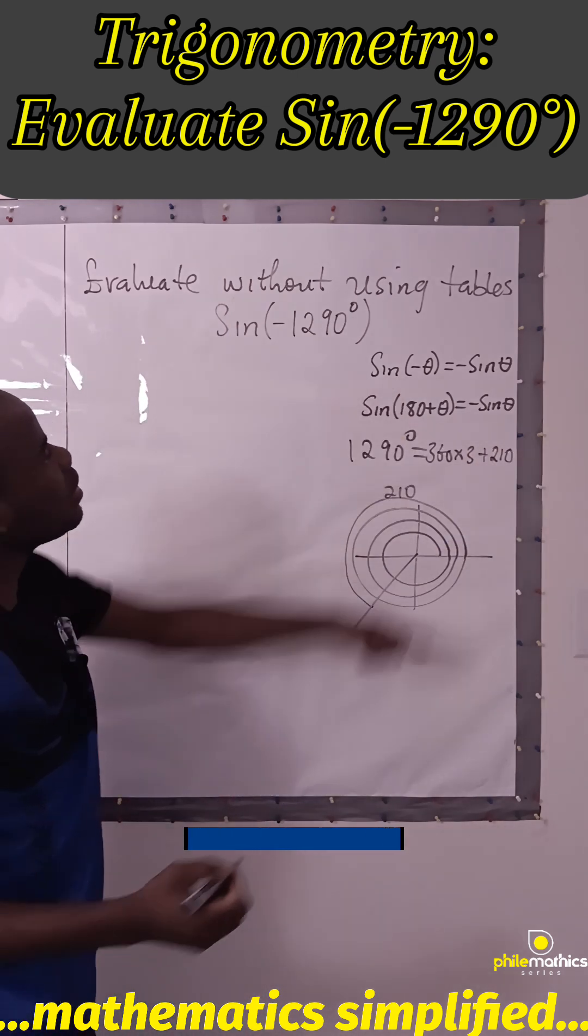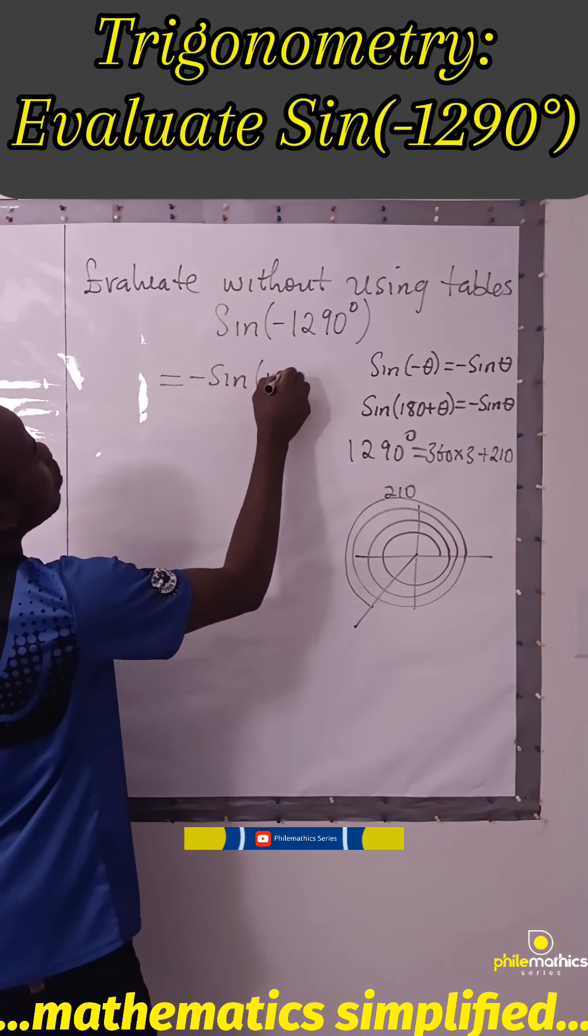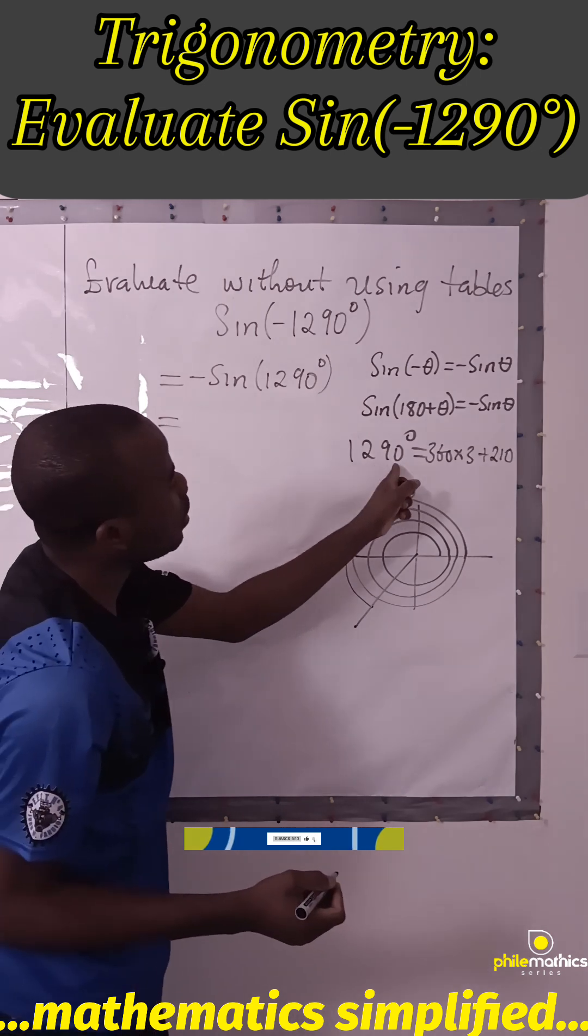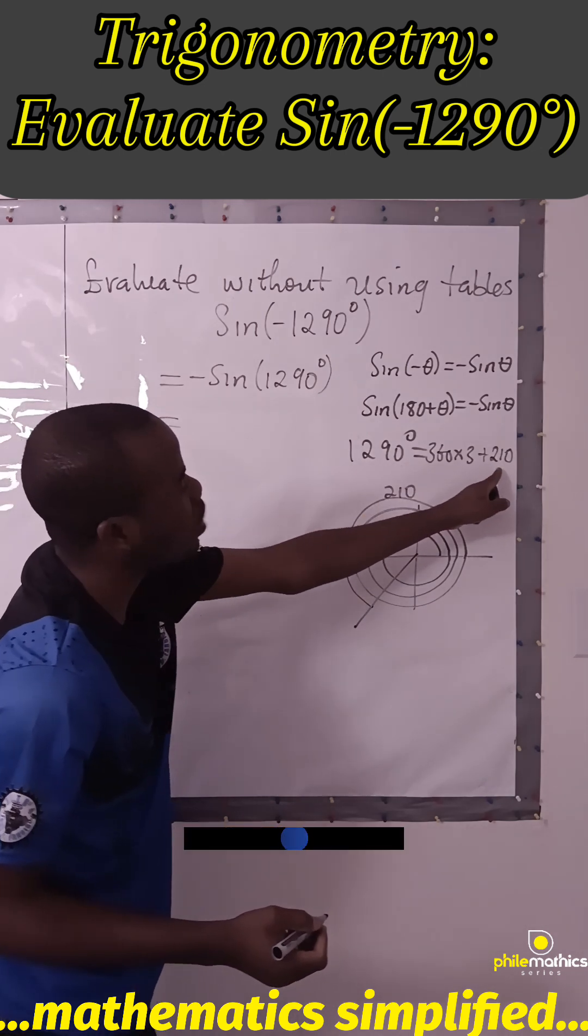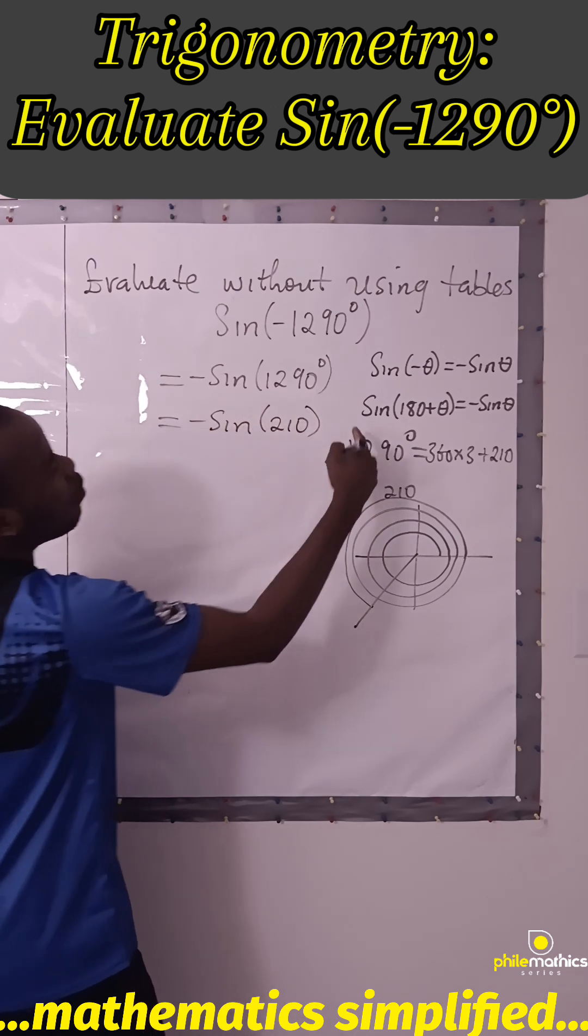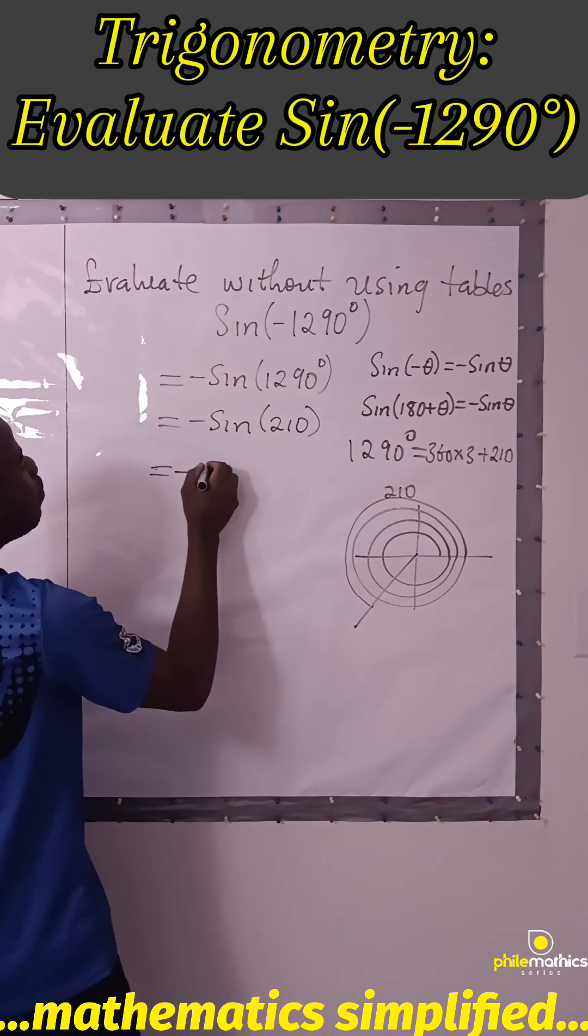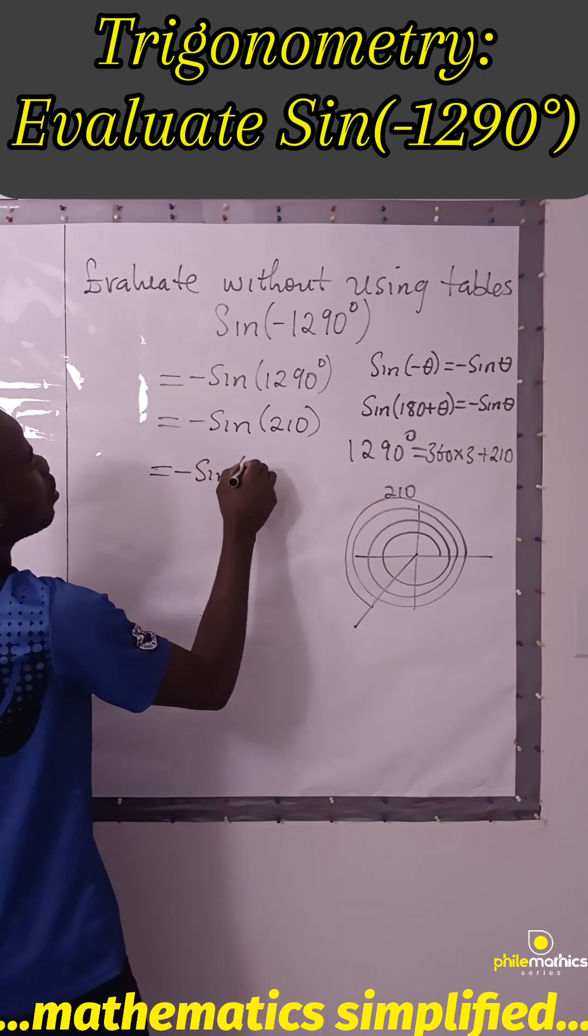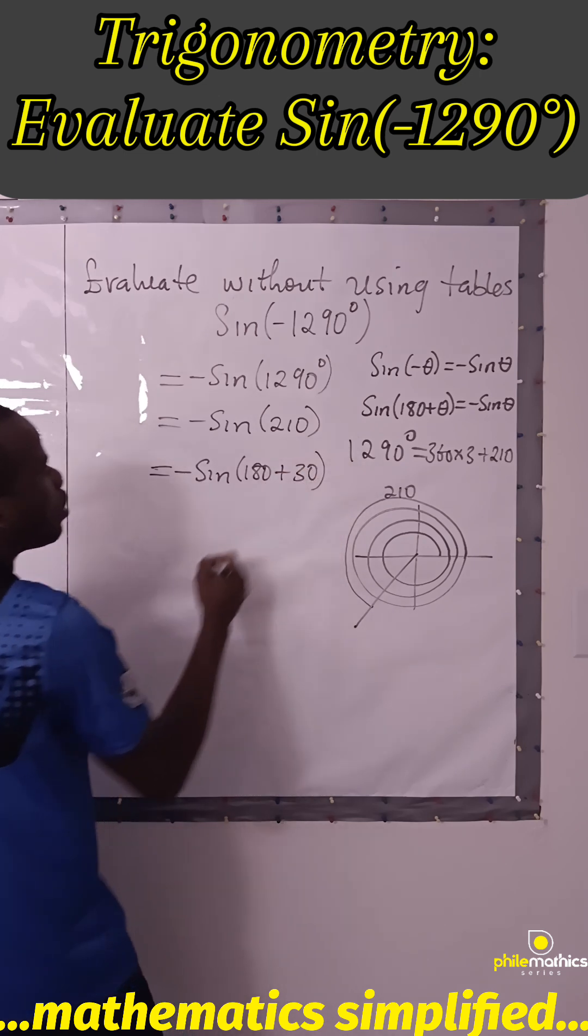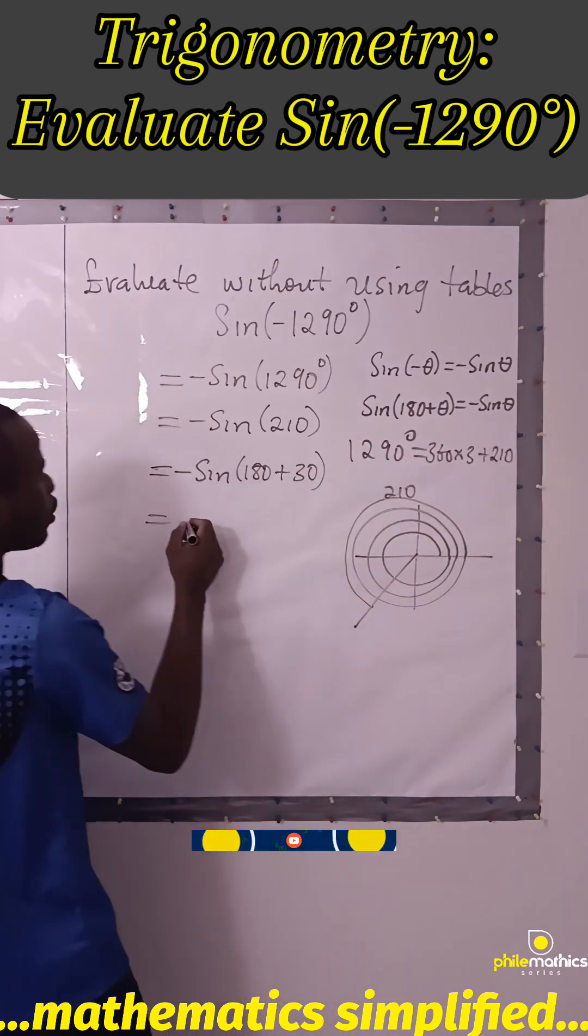So applying this, I have -sin(1290°), and in place of this I can write 210°. So I can write this as -sin(210°), and from this I can express this as -sin(180+30) where 30 is my theta. And you see that this is -sin(θ), so we have this negative with this negative.